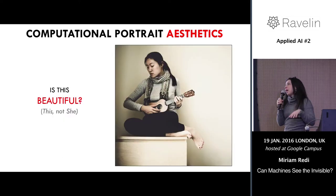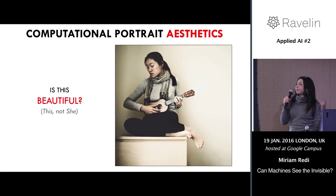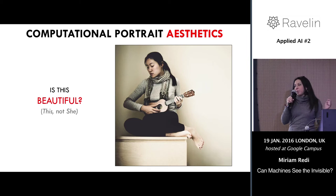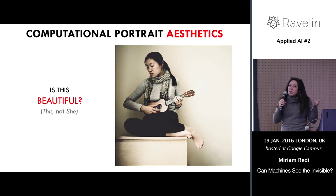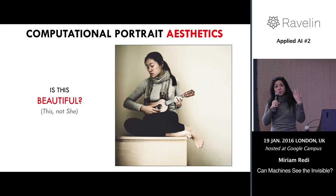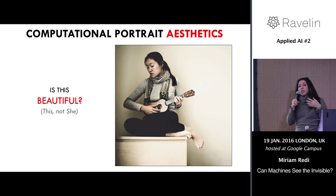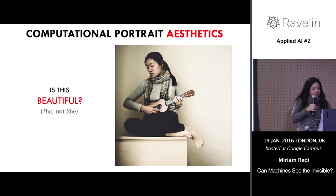At Yahoo Labs we tackle the problem of computational aesthetics under a specific perspective: we focus on the narrow image domain of portraits — images with faces only. We want to build systems that, given a portrait, estimate the beauty of the image with a face. We really don't care whether the person depicted is beautiful or not. We want to know through a machine whether the composition of the image is beautiful, knowing that there is a person in it.